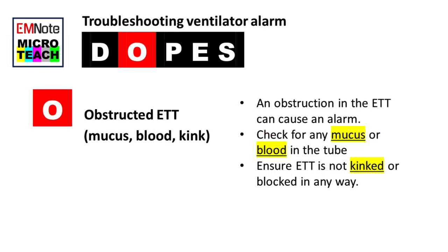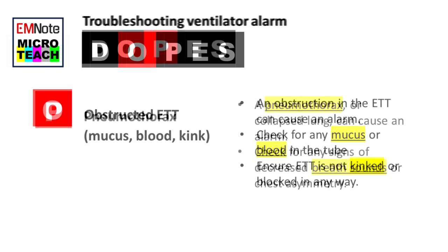O stands for obstructed endotracheal tube by mucus, blood, or kinking. An obstruction in the ETT can cause an alarm. Check for any mucus or blood in the tube and ensure that it is not kinked or blocked in any way.